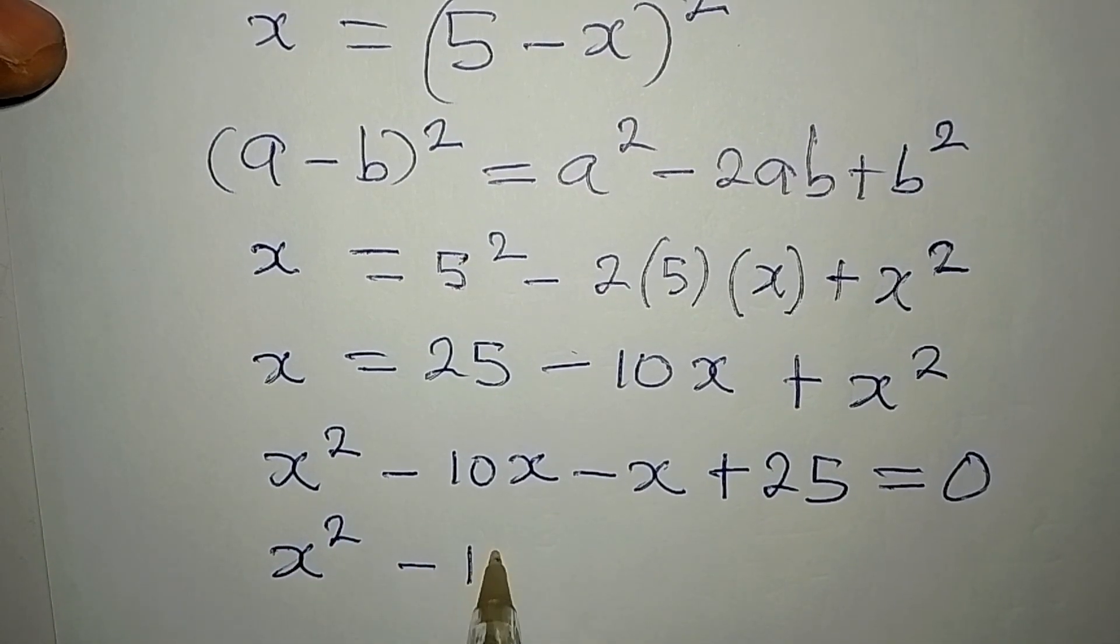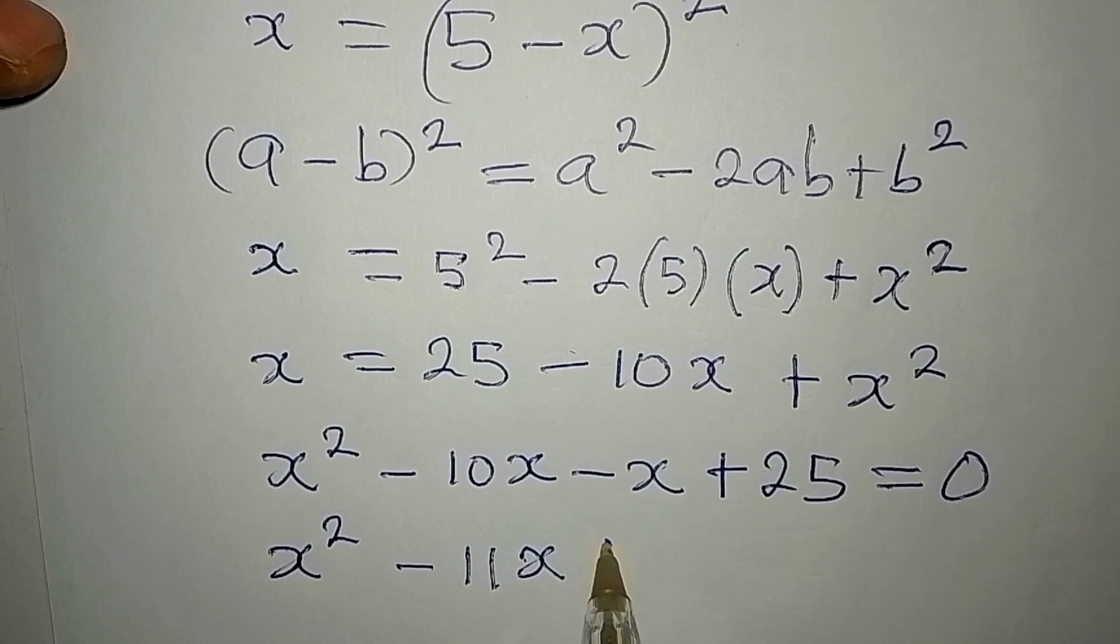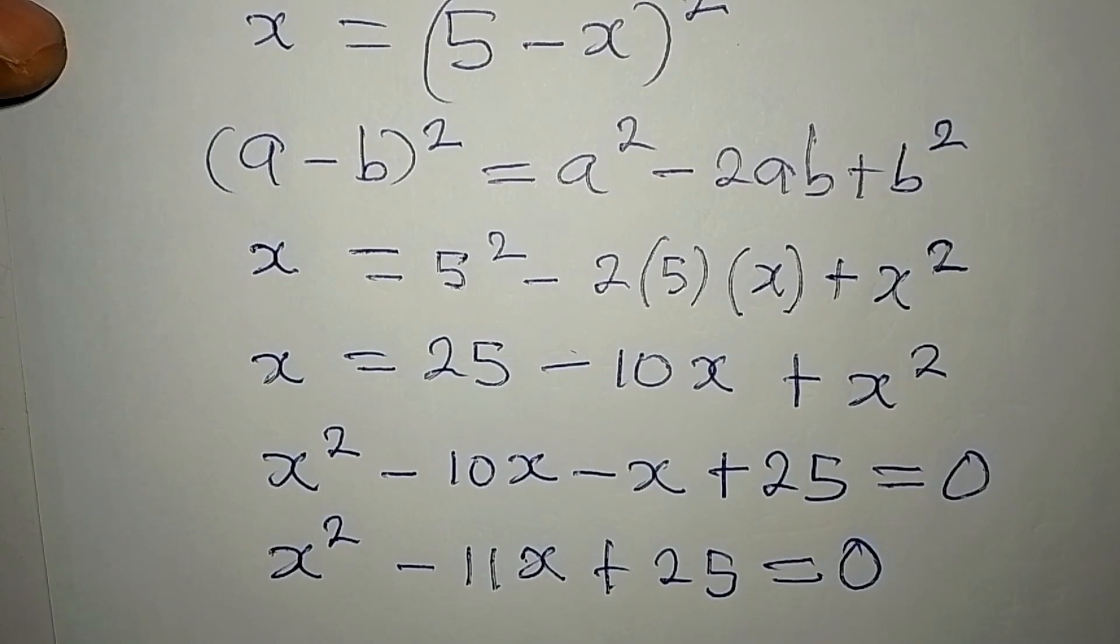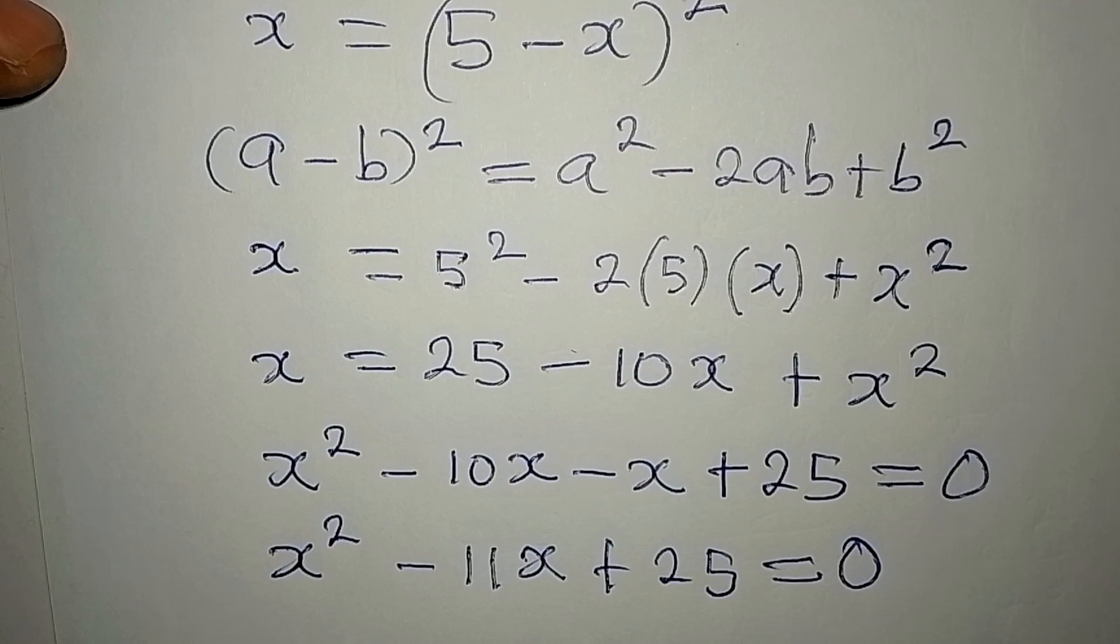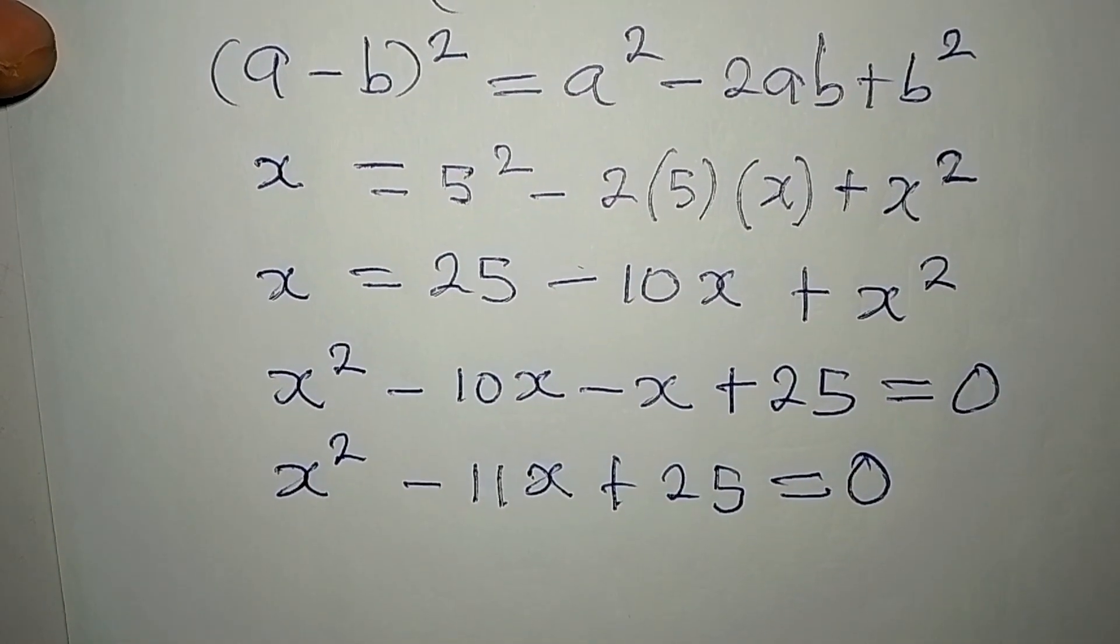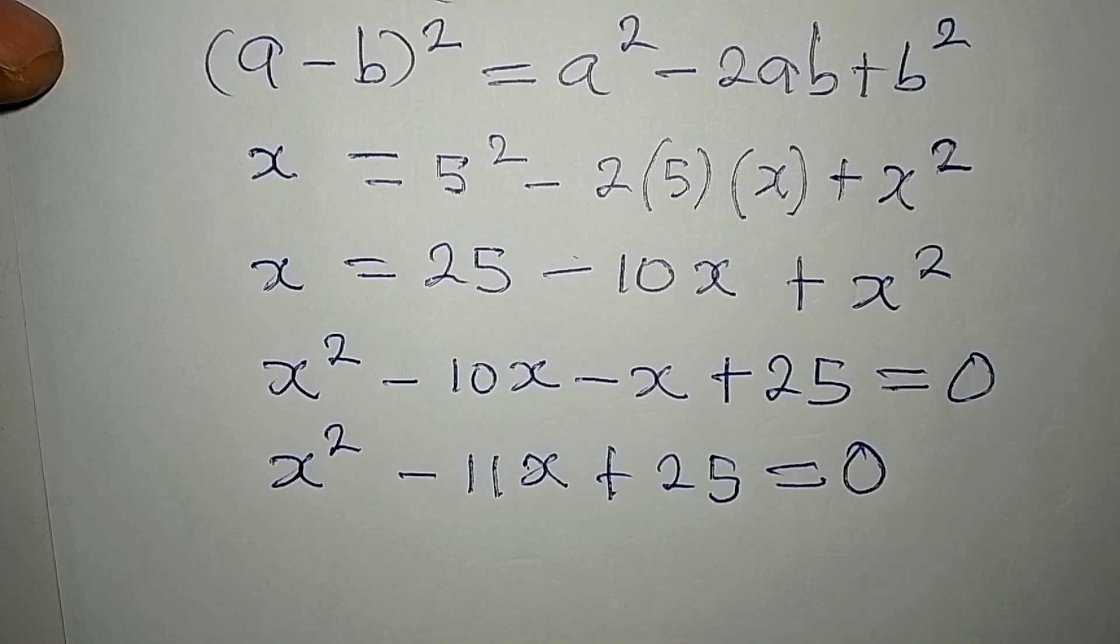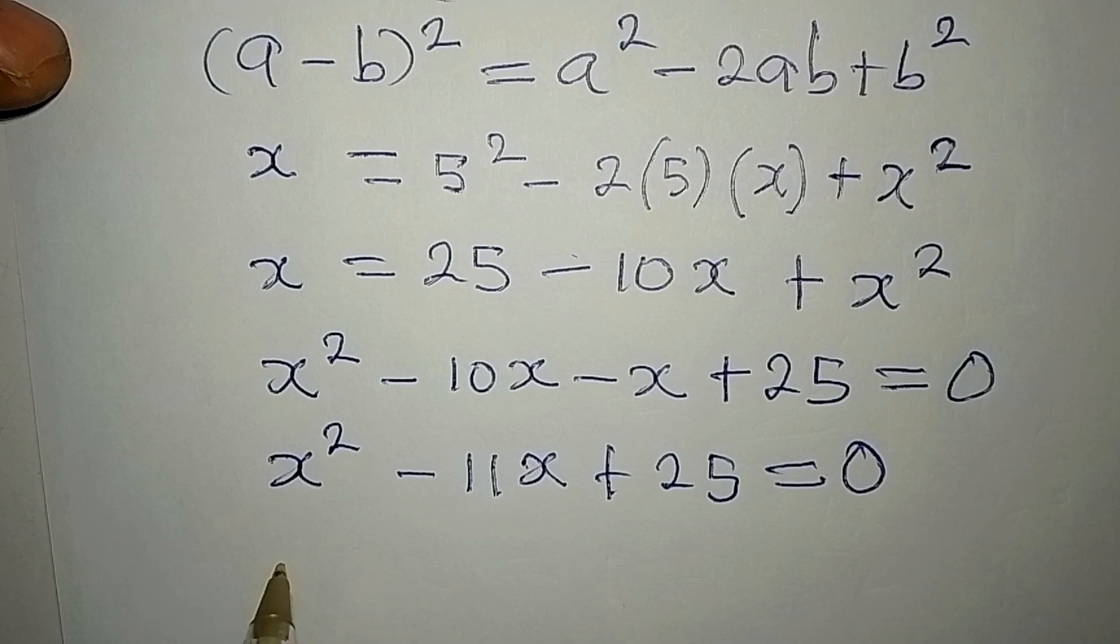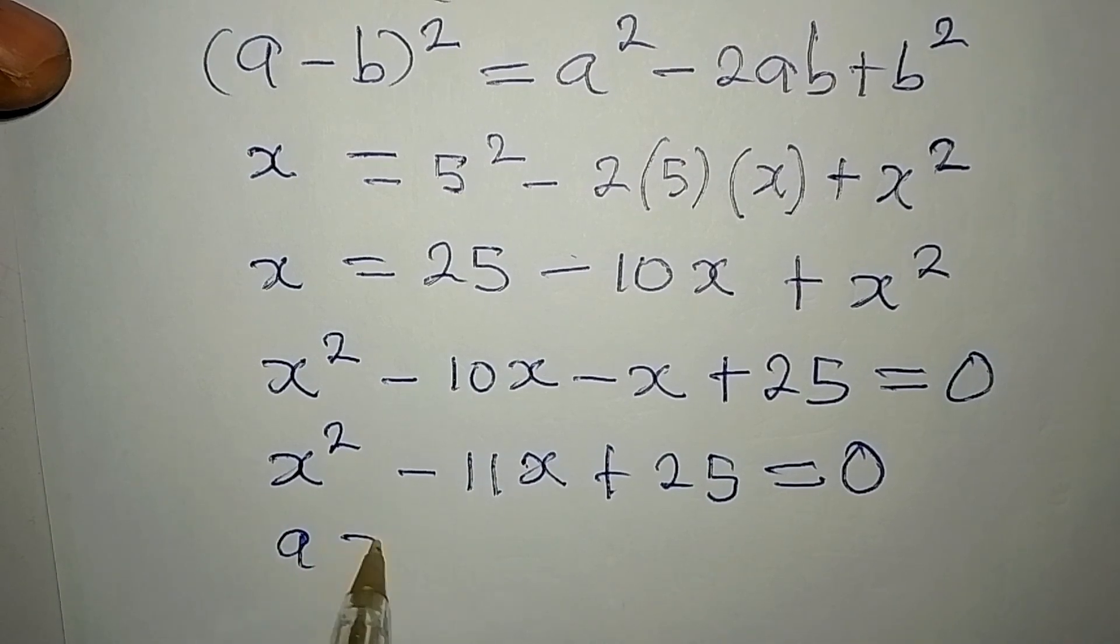Now this means we have x squared minus 11x plus 25 is equal to zero. So this is a quadratic equation and we can provide the solution to it.